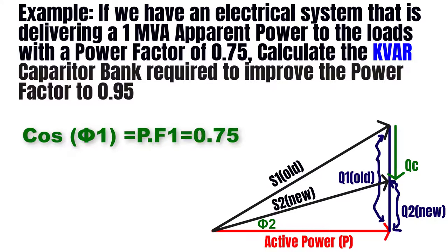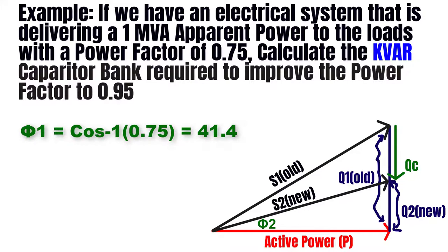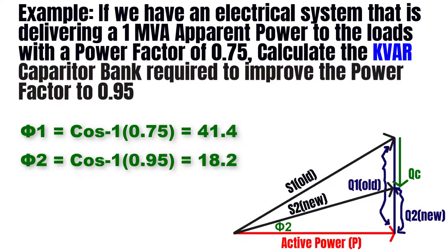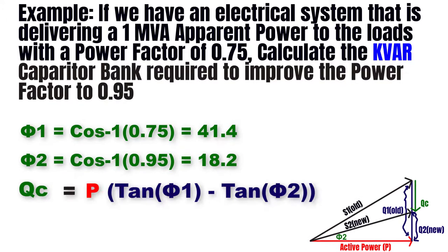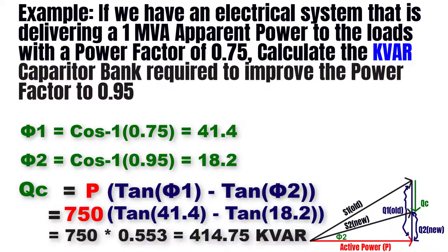We have the old power factor of 0.75 and the new one of 0.95. Phi 1 equals cosine inverse of 0.75, which equals 41.4 degrees. Phi 2 equals cosine inverse of 0.95, which equals 18.2 degrees. Back to our equation: Qc equals P times (tan phi1 minus tan phi2) equals 750 kW times (tan 41.4° minus tan 18.2°) equals 750 times 0.553, which equals 414.75 kVAR.